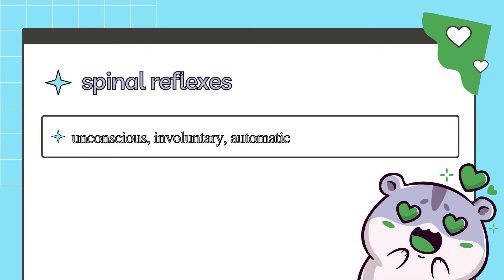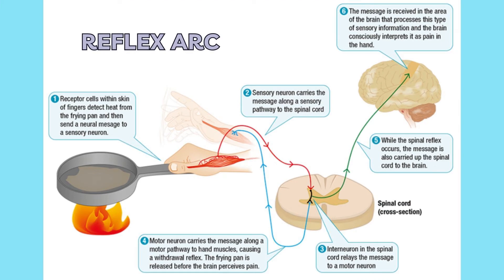It's also considered adaptive because it saves time in potentially harmful situations. Here's an example of the reflex arc. First, receptor cells detect the heat and then send a neural message to a sensory neuron. The sensory neuron carries this message along an afferent ascending tract to the spinal cord. Then, interneurons in the spinal cord relay the message to a motor neuron, and the instructions to withdraw the hand go down the efferent descending tract. While the reflex is occurring, the message is also carried up the spinal cord to the brain, so that you can perceive the pain after the reflex has occurred.